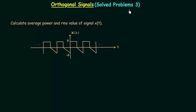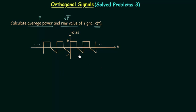Welcome to this part of solved problems. In this part we will calculate the average power and RMS value of signal x(t). The expression of x(t) is not given in the problem, but the waveform is, and by using this waveform we will find out average power P and RMS value. RMS value is equal to the square root of average power P. Looking at the waveform, x(t) is a periodic signal.